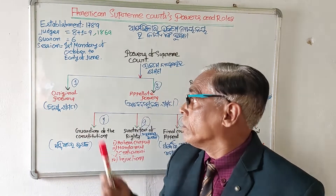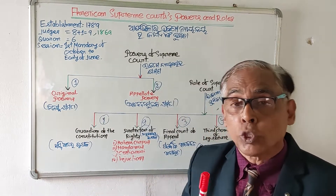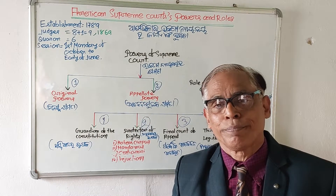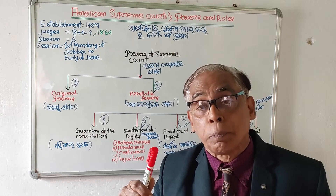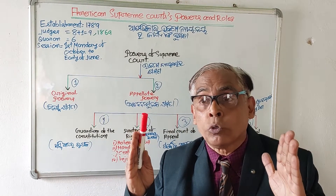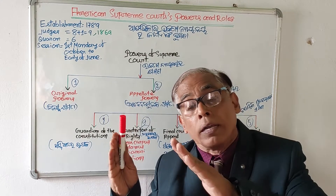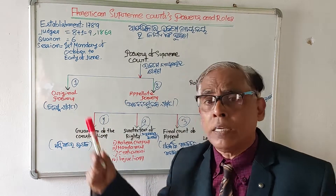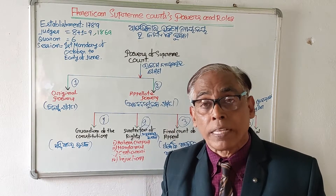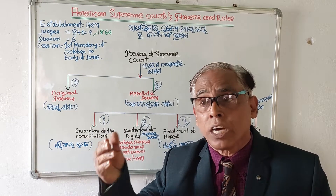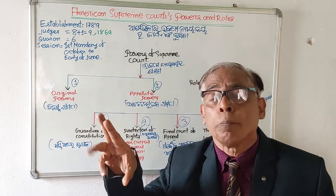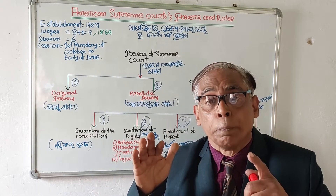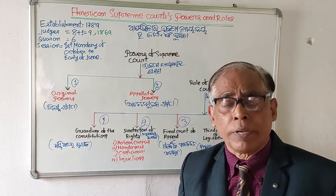Now I will discuss the powers of the American Supreme Court. It has mainly two powers: number one is original power, and number two is appellate power. Original power means there are some powers which the American Supreme Court alone exercises — other courts do not have or exercise that power. The American Supreme Court has two original powers: first, it exercises original jurisdiction in cases involving ambassadors, consuls, and public ministers; and second, it exercises original jurisdiction where there are disputes between or among states.